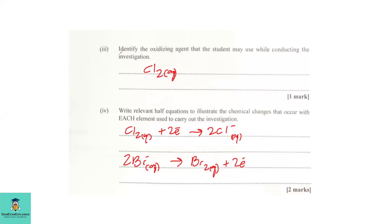Part three, identify the oxidizing agent that the student may use while conducting the investigation. That oxidizing agent is aqueous chlorine.